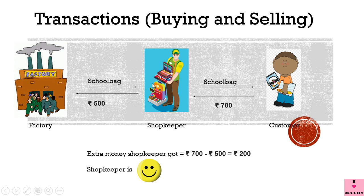The shopkeeper bought a cool bag from the factory after paying rupees 500 and sold the same bag to a customer for rupees 700. He bought it for rupees 500 and got rupees 700, so he got extra money. The extra money the shopkeeper got is equal to rupees 700 minus rupees 500, equal to rupees 200. So the shopkeeper is again happy.